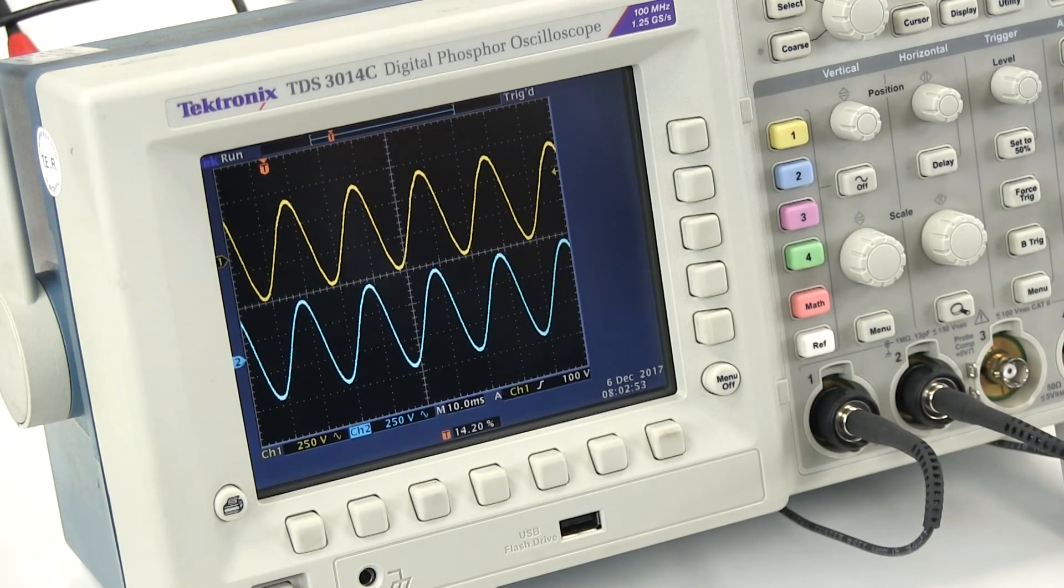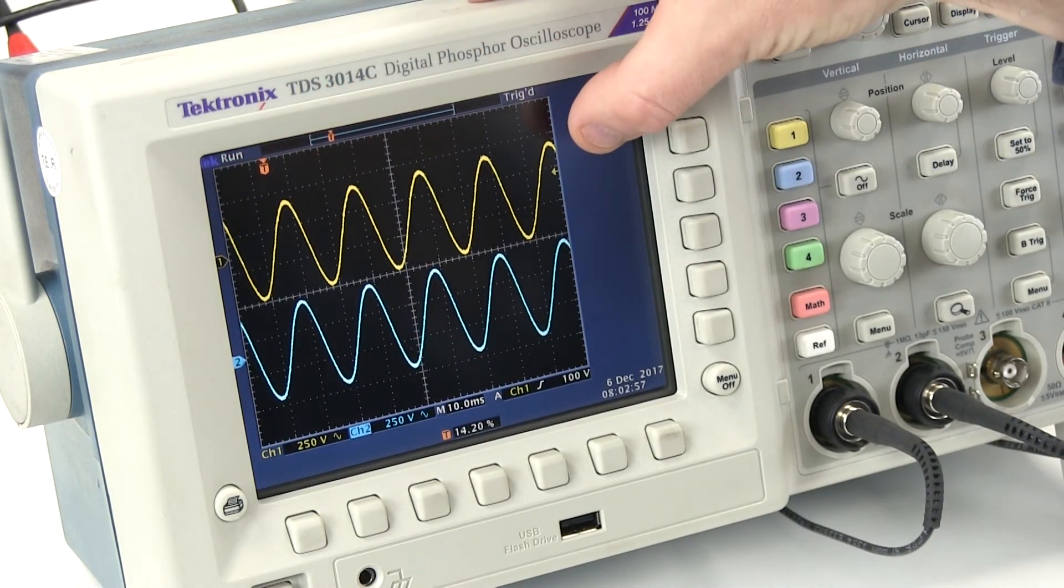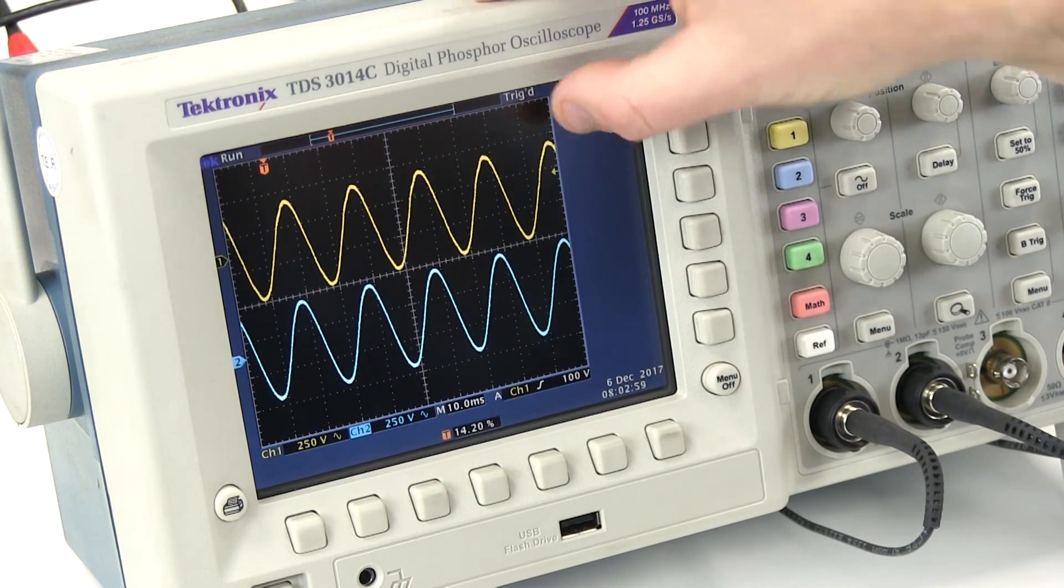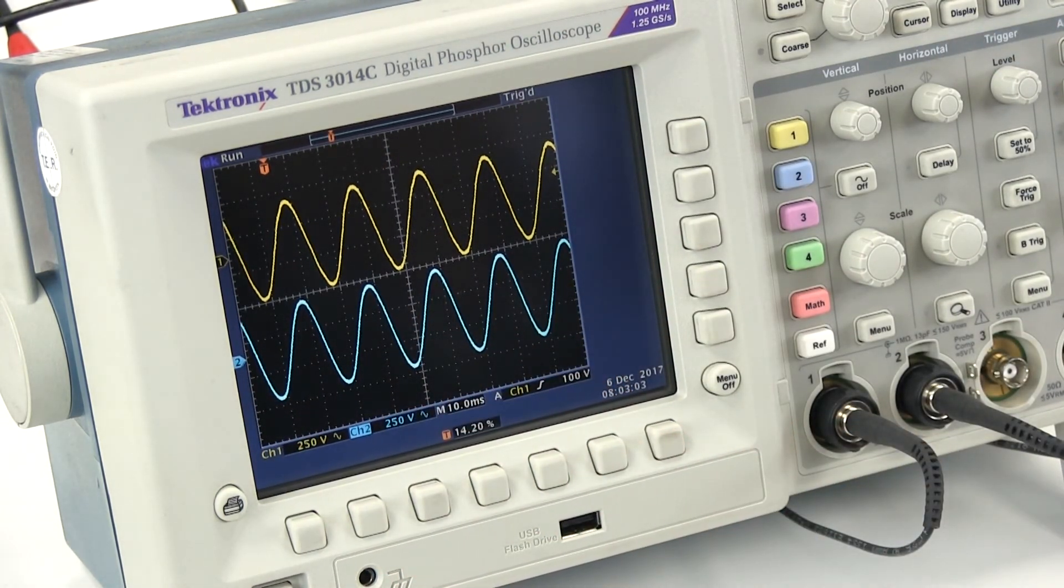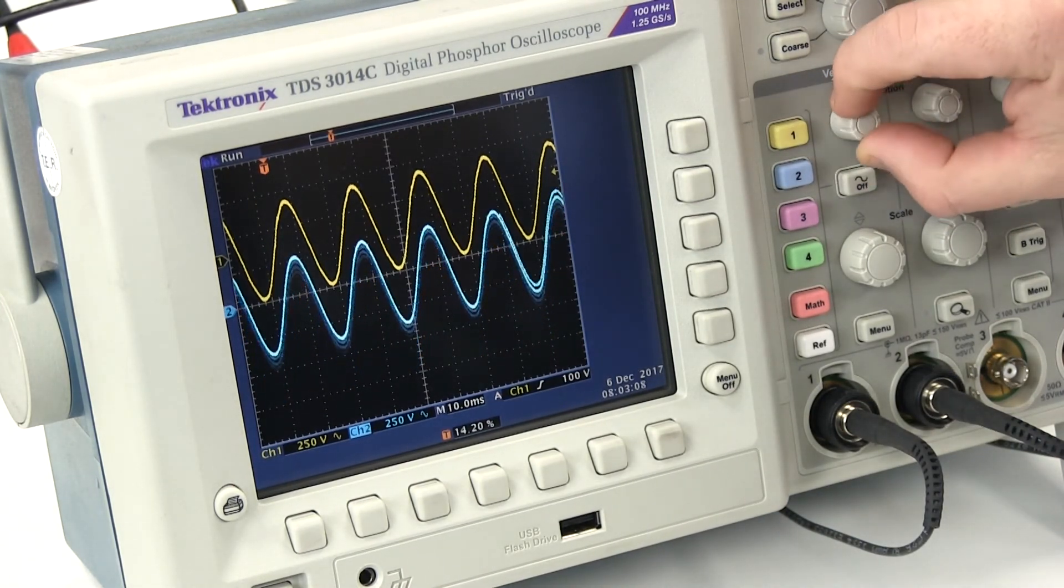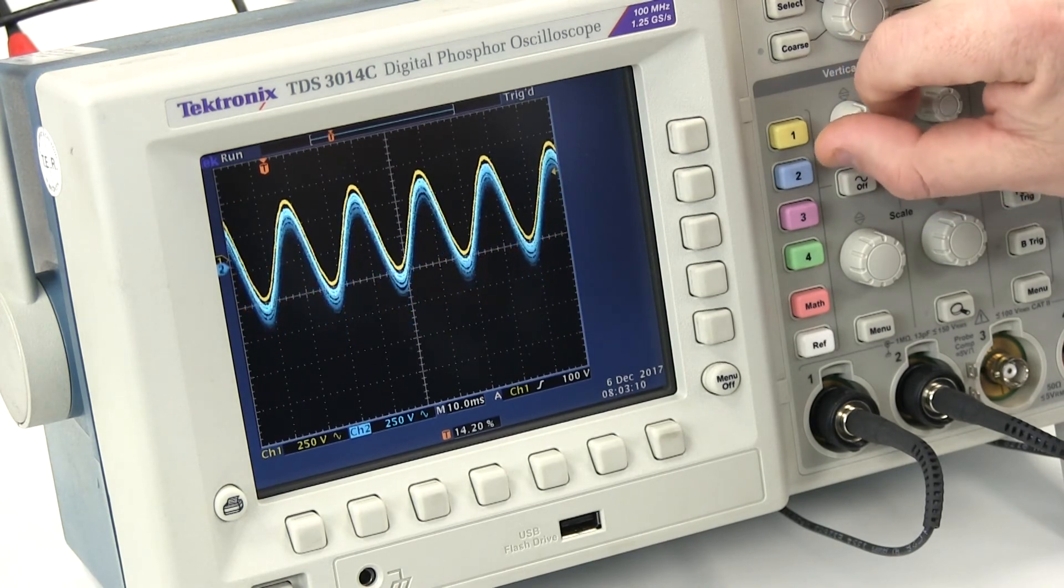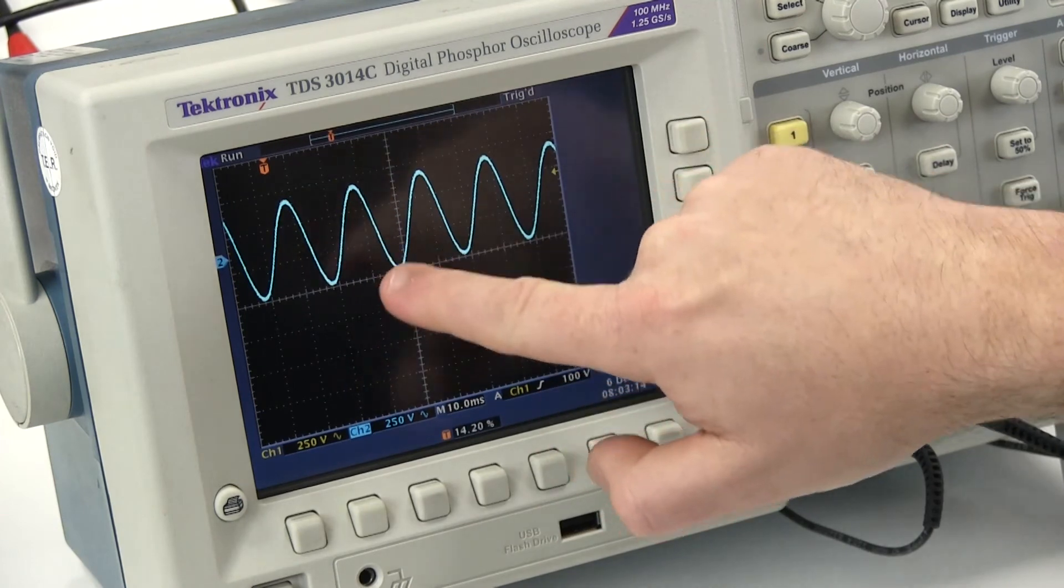If we take a look at the oscilloscope, the waveform across the top is the waveform supplying the bypass line. The waveform along the bottom is the waveform being produced by the inverter. If I move those two waveforms over one another, you can see clearly that they're practically identical and hence in phase with one another.